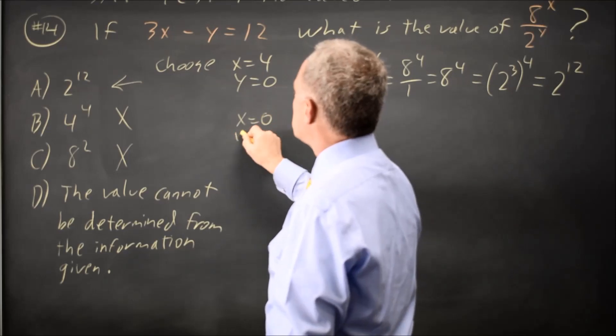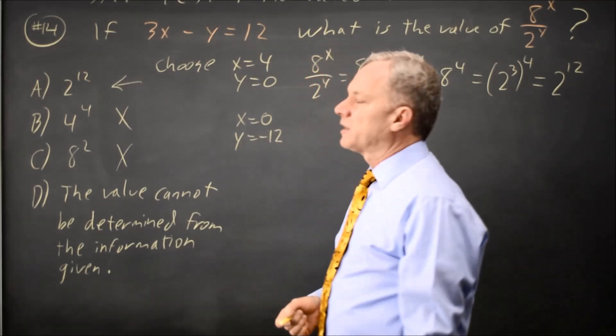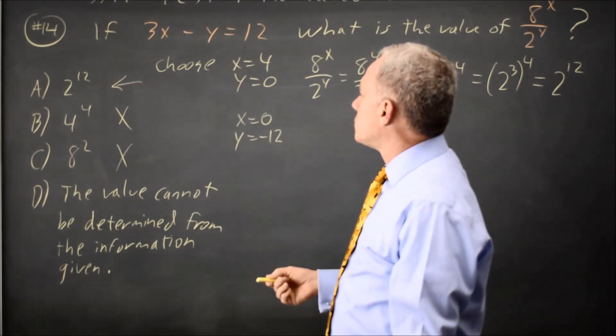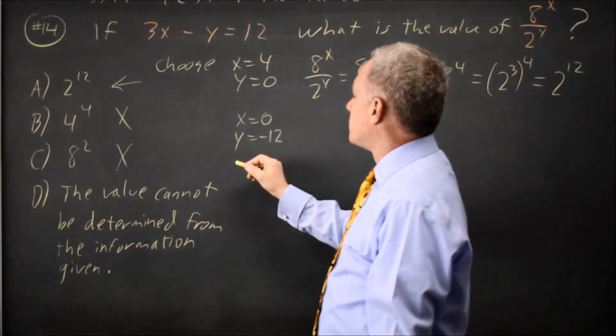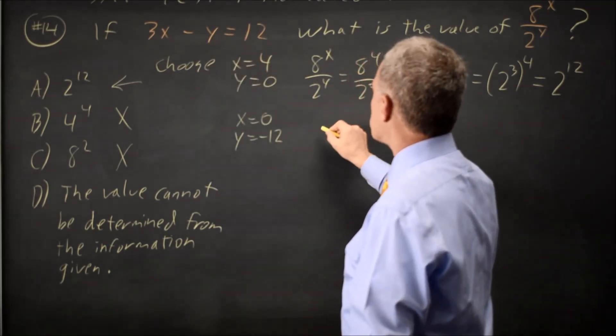How about x equals 0, y equals negative 12. I would not do the second one on the actual SAT, but it's nice to illustrate that it doesn't matter what numbers you choose. 0 minus negative 12 is positive 12, so that works.